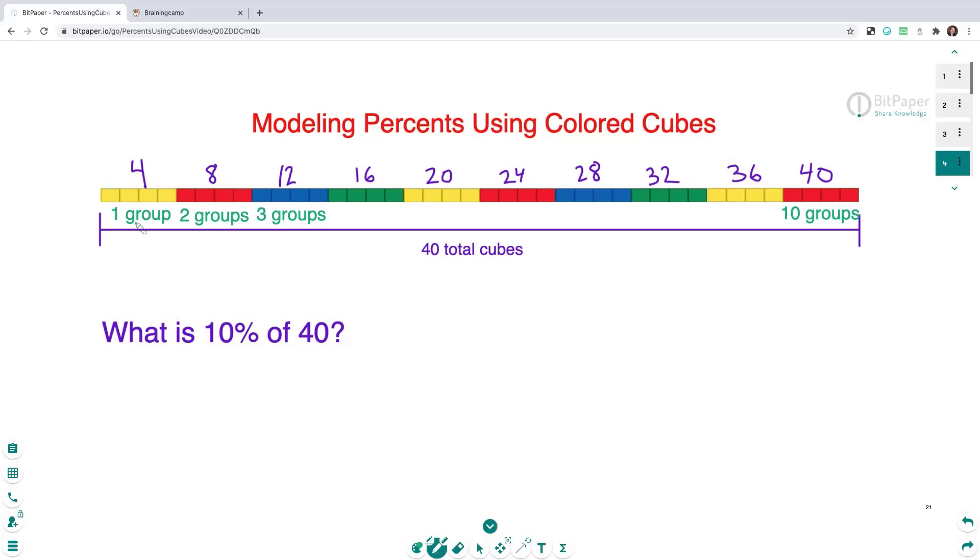So if I want to find 10% of 40, I want to find one of my 10 groups. So right here, in one of my 10 groups, I have four cubes. So 10% of 40 equals four, I have four cubes in one group.